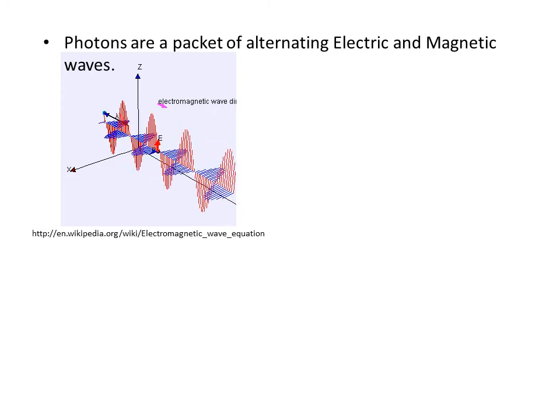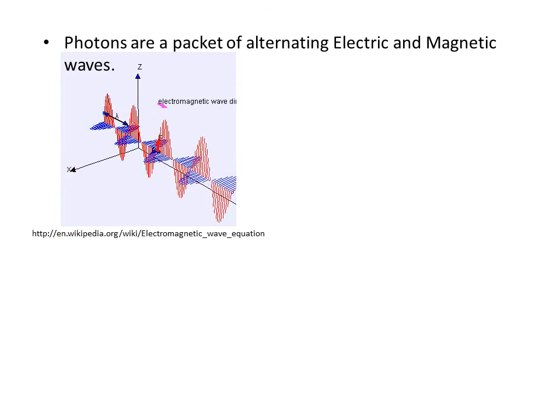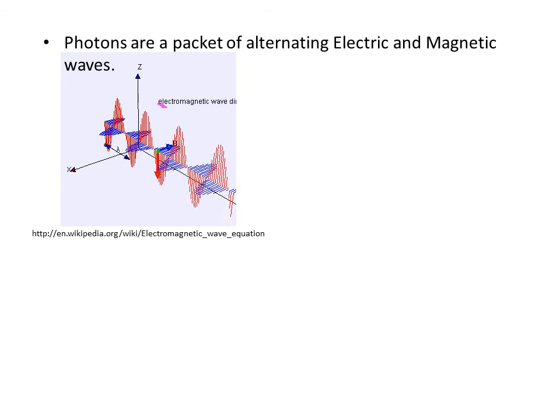Actually, it's in the negative y direction. But what we can start to see is that this is what a wave looks like. Well, a photon is a little bit more complicated than just this.